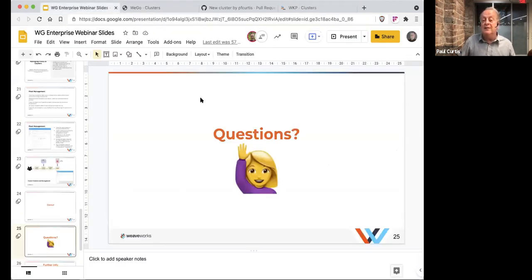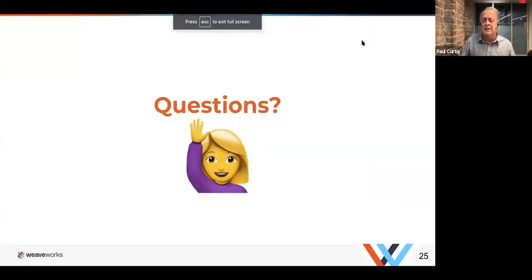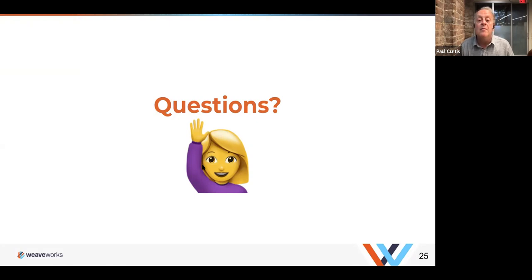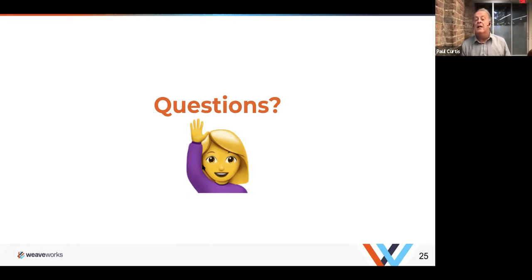Moving to Q&A: regarding the substitutions in the CAPI template — the ones substituted with dollar-braces are the ones coming from the UI, which are substituted before the CAPI template is created. The ones with double curly braces are CAPI-level substitutions, potentially filled in by the provider when the cluster is actually built. For the most part, you'll use dollar curly braces rather than double curly braces.